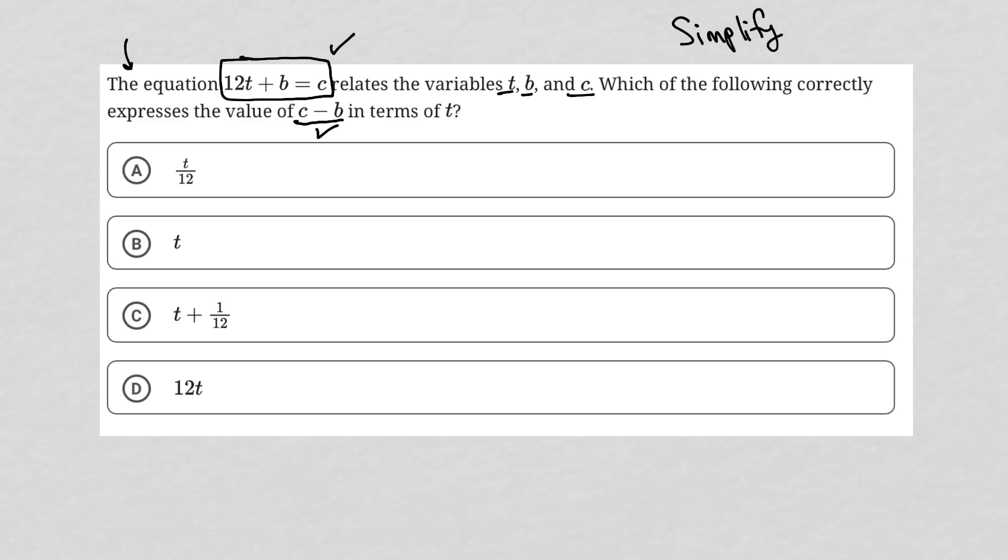So what we want to do is look at what the question is asking us to find, c minus b, and figure out how do we get c minus b isolated from the equation that was provided.